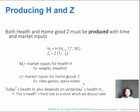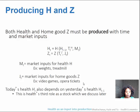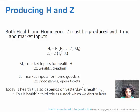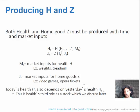Health and home good z have to be produced. The individual produces their health and their fun using time and market inputs. So h sub t, health in a particular time period t, equals health as a function of h t minus 1 — prior period health, your beginning state of health — the time that you spend investing in your health, and some market inputs like weights or a treadmill.